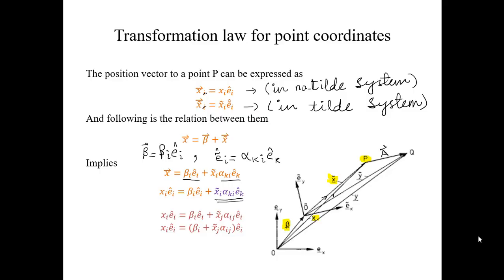In this lesson, we will derive the transformation law for point coordinates, for coordinates of a point. The position vector to a point P can be expressed as X vector equal to XI EI-hat in the non-tilt system, and X-tilt vector will be equal to XI-tilt EI-tilt-hat in the tilt coordinate system.